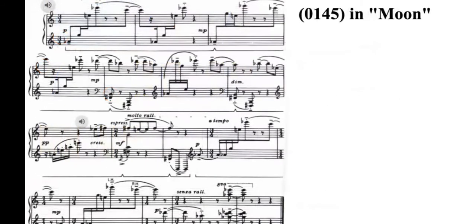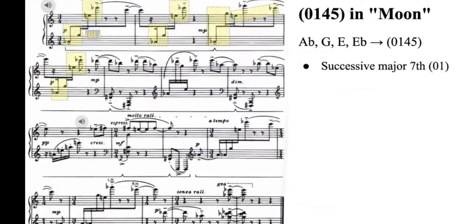Concerning the usage of 0145 in the second movement Moon, it also gains appearance in an opening measure. However, it was presented as two consecutive major sevenths, Ab, G, and Eb. Let's have a listen.